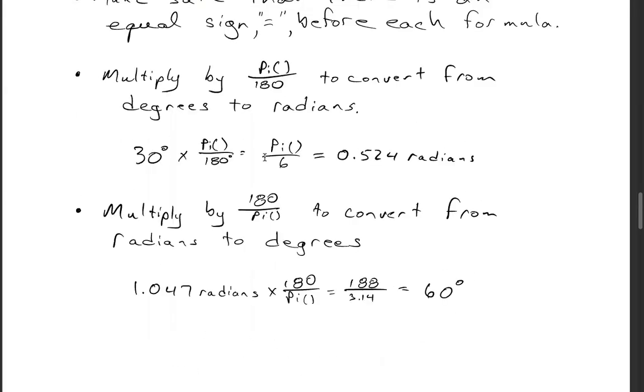The opposite: multiply by 180 over pi to convert from radians to degrees. 1.047 radians times 180 over pi is 188 over 3.14, which gives you 60 degrees.